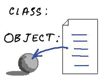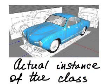What exactly is an object? Object is a real thing — the actual instance of the class at runtime.